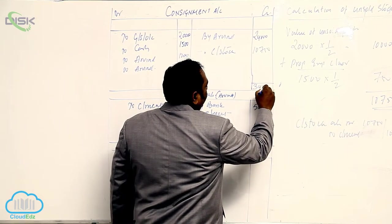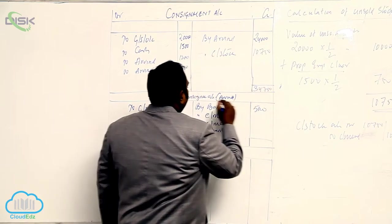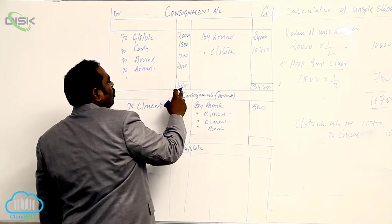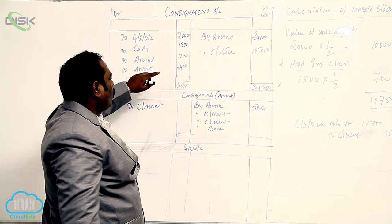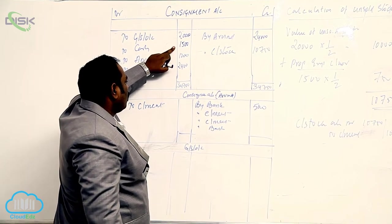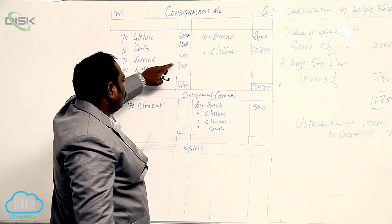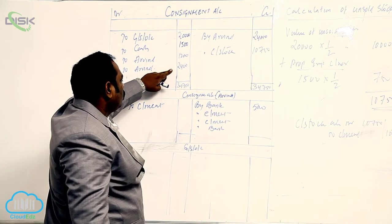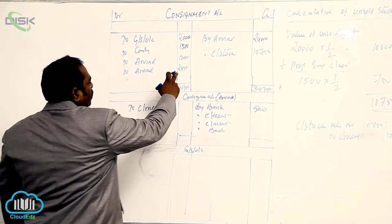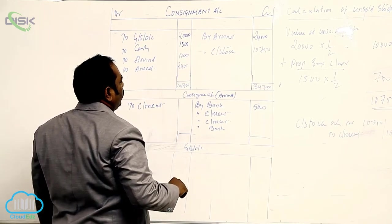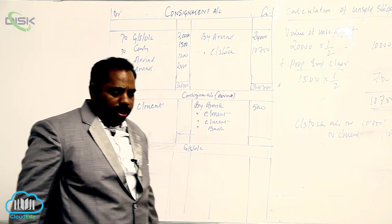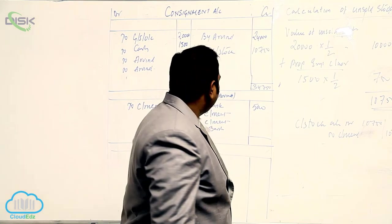To find profit or loss: the debit side totals 34,750. Credit side: 34,070. Calculating: 34,070 minus 20,000 = 14,000; minus 1,500 = 12,500; minus 1,200 = 11,300 — wait — minus 2,400 = 10,750; minus 600 = 10,150; minus 500 = 9,650. Profit on consignment is approximately 9,650.